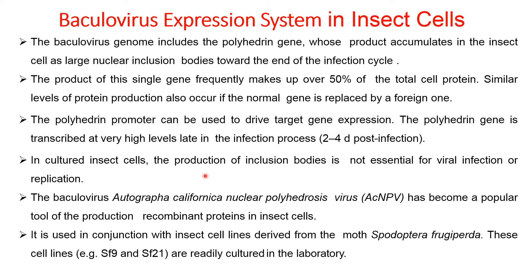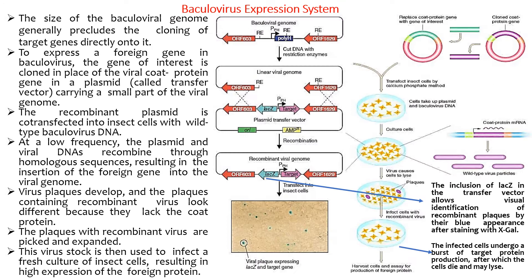In cultured insect cells, the production of inclusion bodies is not essential for infection or replication. The baculovirus Autographa californica nuclear polyhedrosis virus has become a popular tool for the production of recombinant protein in insect cells. It is used in conjunction with insect cell lines derived from moth Spodoptera species.